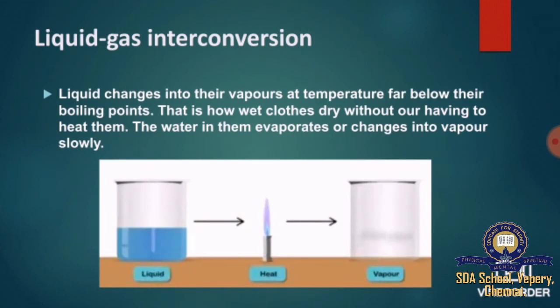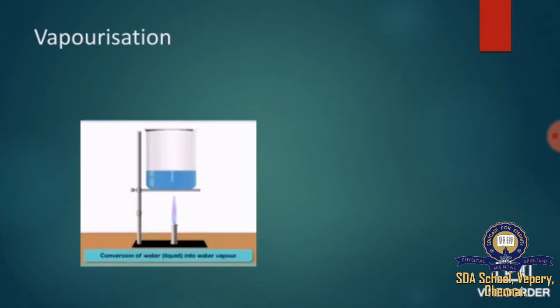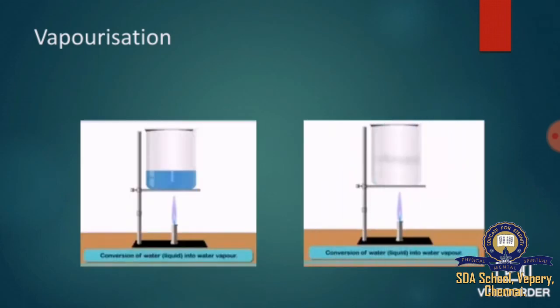When we take liquid as matter and heat it, it can be changed into vapor. This process is called liquid-gas interconversion. Conversion of liquid into vapor on heating is called vaporization, and it occurs at all temperatures. For example, conversion of water (liquid) into water vapor.